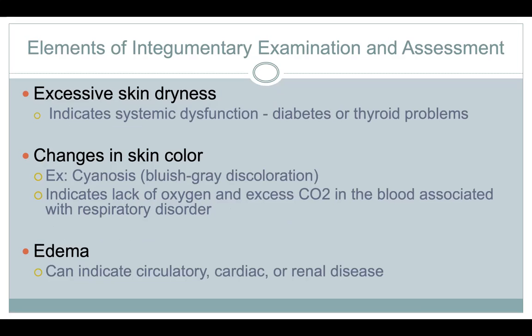Excessive skin dryness usually indicates a systemic dysfunction — usually diabetes or thyroid problems. I see this a lot in public, especially in the summer — older adults with a lot of dry skin on their lower legs. That's indicative of diabetes or thyroid problems. A lot of times people let that go because they think they just have dry skin and need to put lotion on.